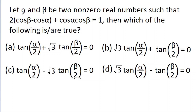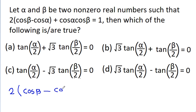In this video, we have given that alpha and beta are two non-zero real numbers such that 2 times cos(beta) minus cos(alpha) plus cos(alpha)cos(beta) is equal to 1. Then we have to choose the correct option from the four options given. So, we have given that 2cos(beta) minus cos(alpha) plus cos(alpha)cos(beta) is equal to 1.